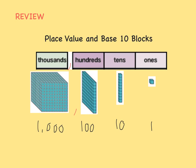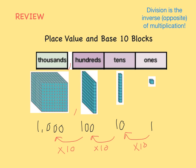You also know that each place is 10 times greater than the place before it. 1 times 10 equals 10. 10 times 10 equals 100. And 100 times 10 equals 1,000.